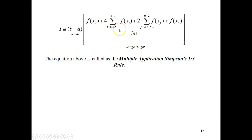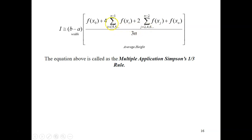The formula for multiple application Simpson's 1/3 rule includes the function value at the first limit and the function value at the last limit. In the middle, there are two terms: one multiplied by four and another multiplied by two. The factor of four applies to the odd-indexed points, and the factor of two applies to the even-indexed points.